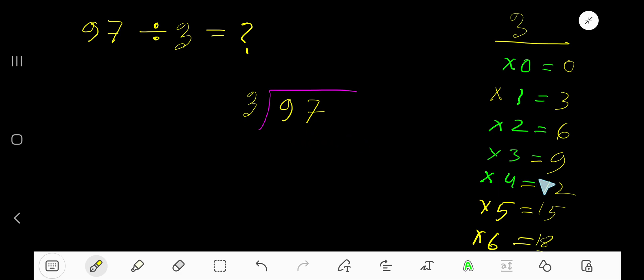3 goes into 9 how many times? 3 times. 3 times 3 is 9, subtract to get 0. Bring down this 7. 3 goes into 7 how many times? 2 times. 2 times 3 is 6, subtract to get 1. So 32 remainder 1 is our answer.